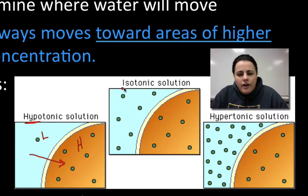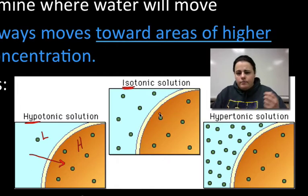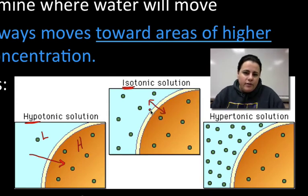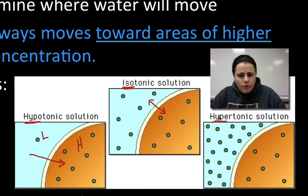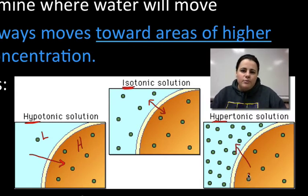The second one is called isotonic. Iso means same, meaning that the inside and outside concentrations of solution are the same strength. In this scenario, water will move both in and out of the cell. The last one is called hypertonic — hyper means above or more. The solution on the outside of the cell is hypertonic, meaning it has more solute. Water likes to move to where there's more stuff, so water will be drawn out of the cell.